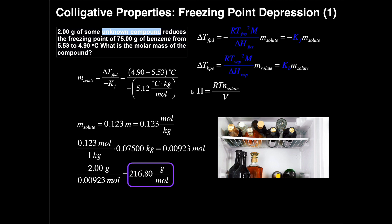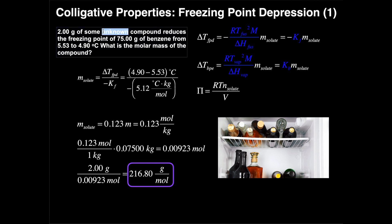One very important point: in the expanded formula for Kf — R × Tfusion² × M / ΔHfusion — the big M is the molar mass of the solvent, not the solute. So here, M would be the molar mass of benzene. If the problem asks for the molar mass of the solute, you do it as we just did. If they give you or ask for the molar mass of the solvent, you're working with the Kf expansion — we'll do an example of that in the next video or two.